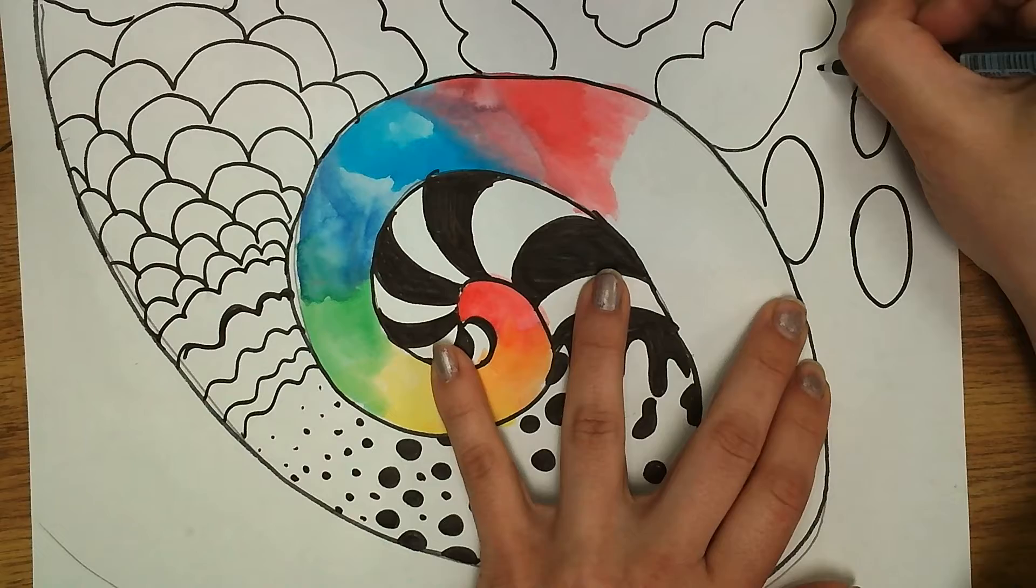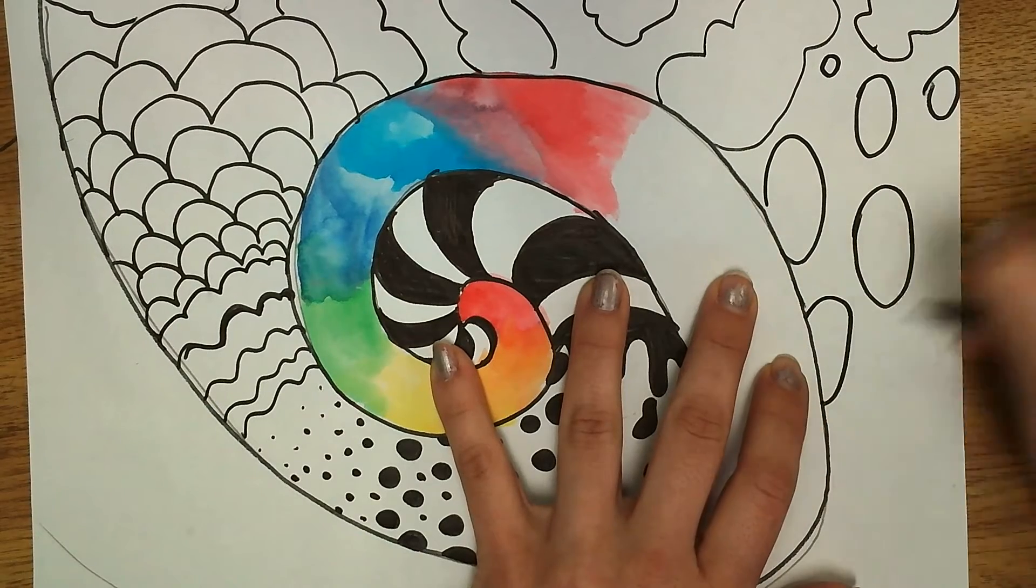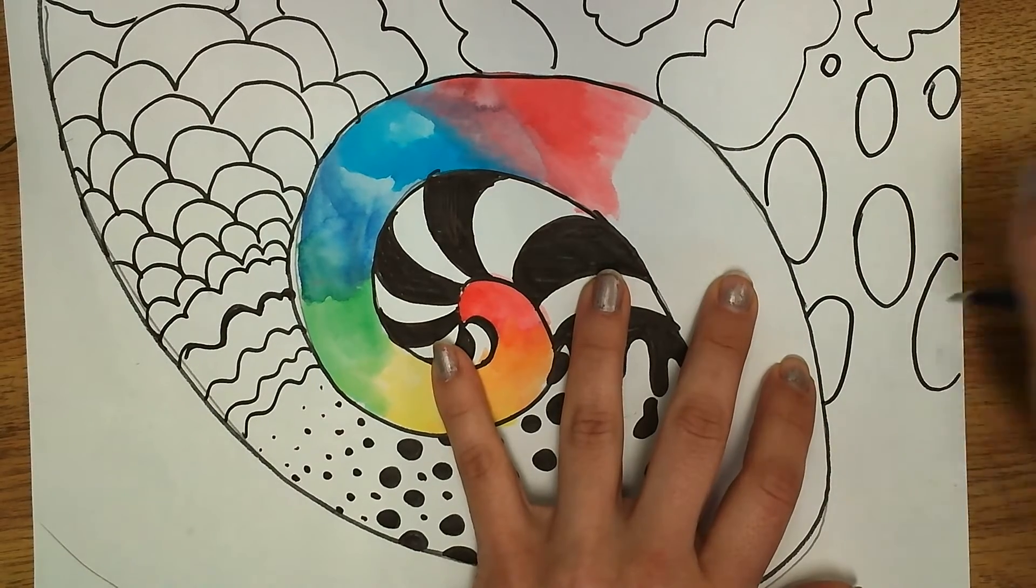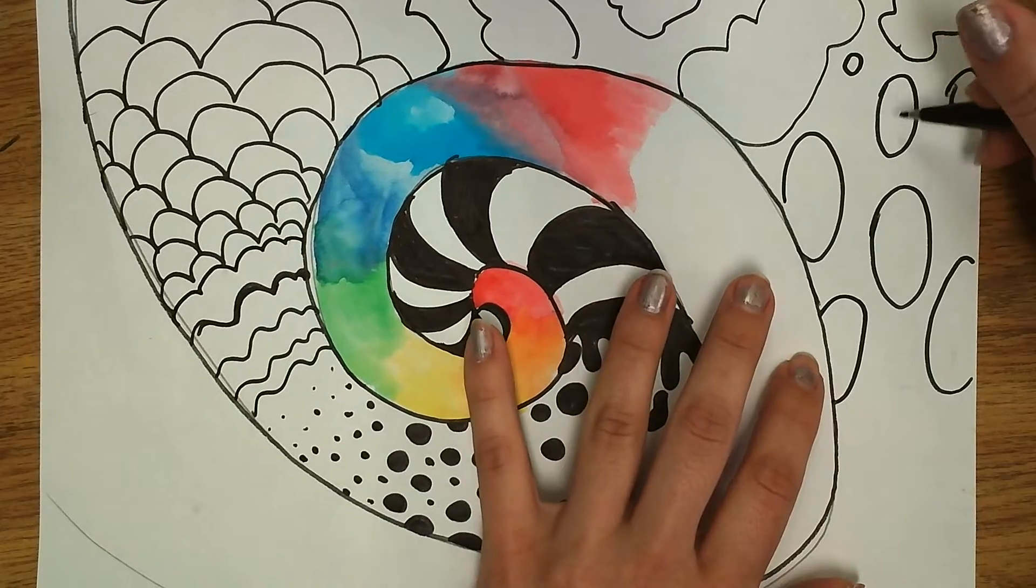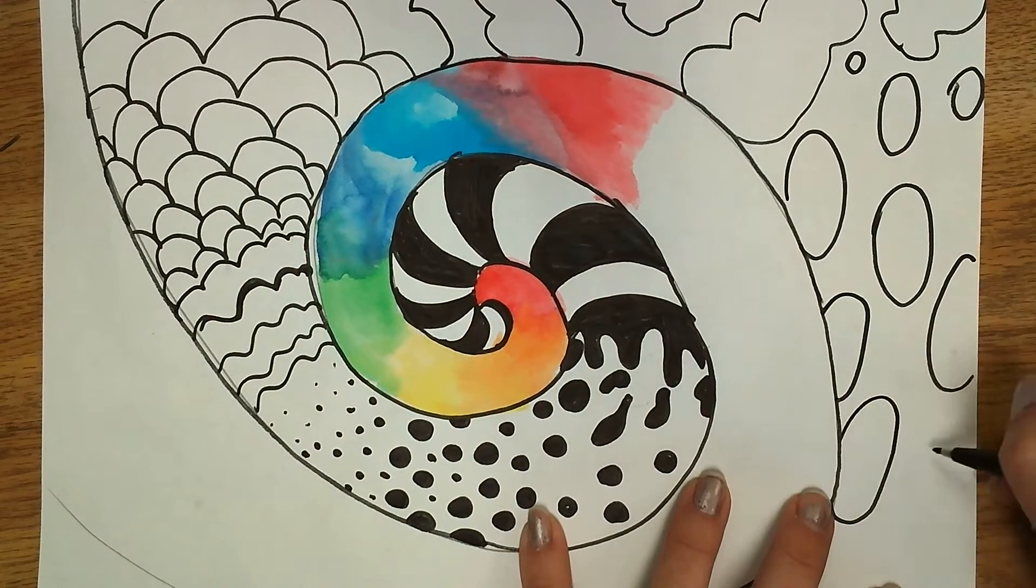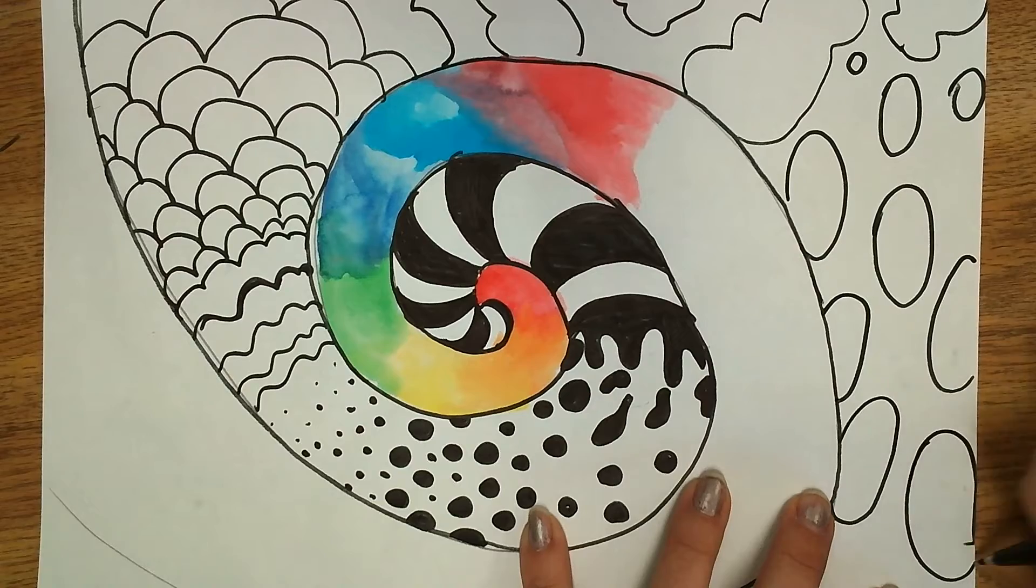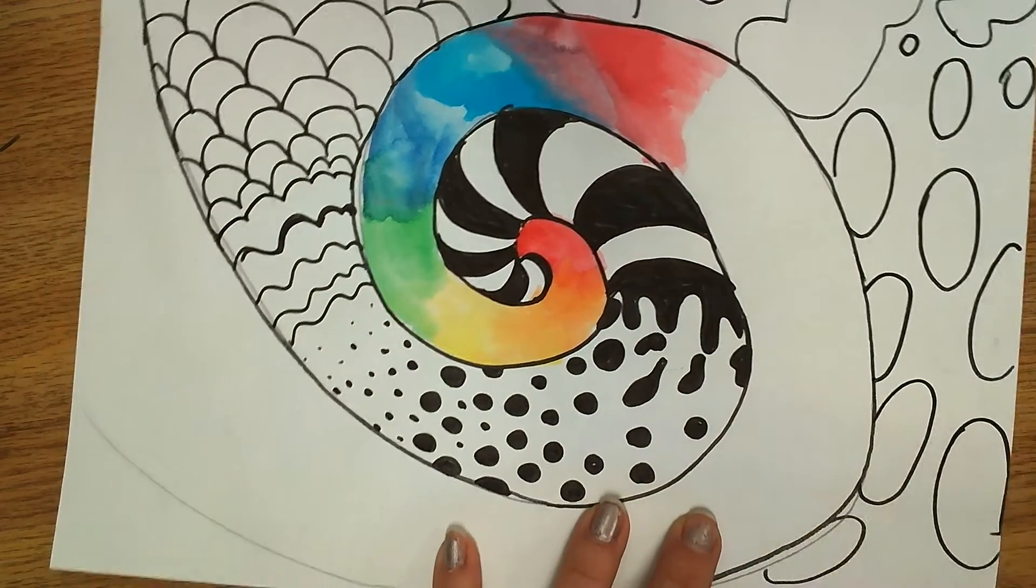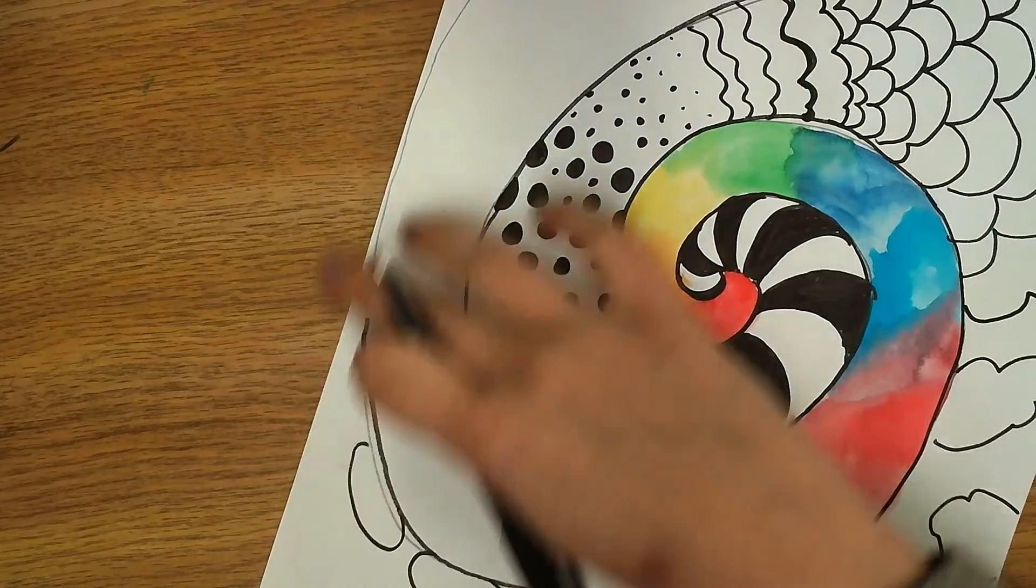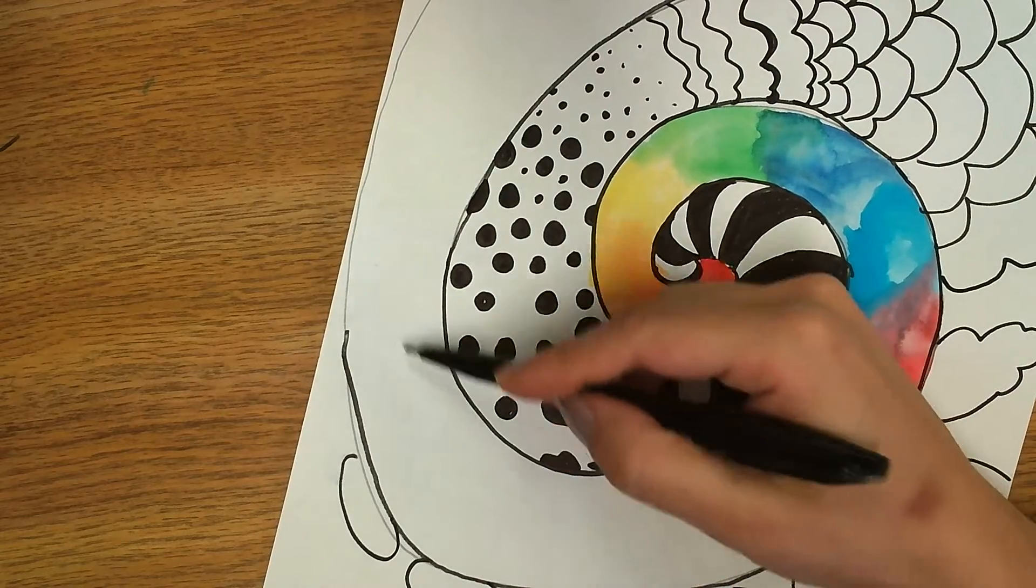So I've already done circles, let's see, maybe I'll just do some oval spots or like leopard spots. Those are all ideas, right? And you can even get more detailed and color in these shapes. I'm just going to keep going all around.